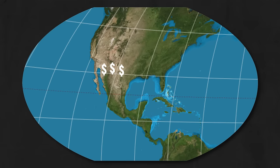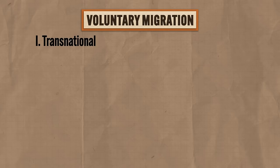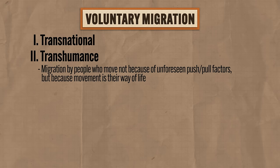Voluntary migration occurs when people leave their homes because they want to. There are seven categories of voluntary migration. First is transnational migration: these migrants live in a place that is not their home but retain strong ties to their culture and family back home, often living in two cultures at once. A major way this works is transnational workers sending money home to the people they left behind. Second is transhumance: migration by people for whom movement is their way of life — nomadic peoples who move from one area to another are an example.